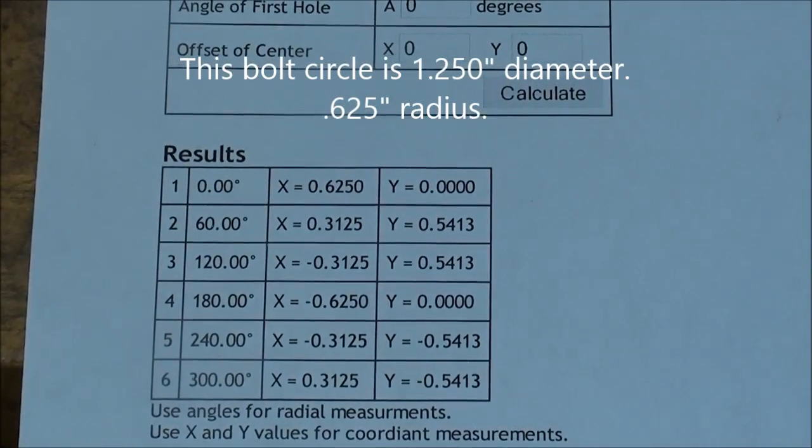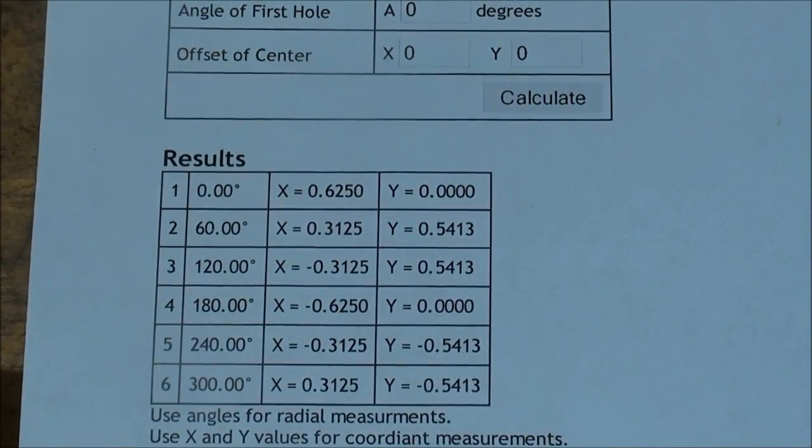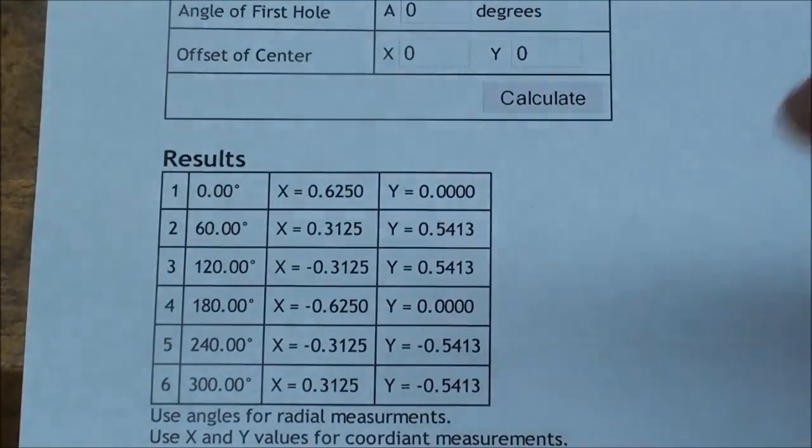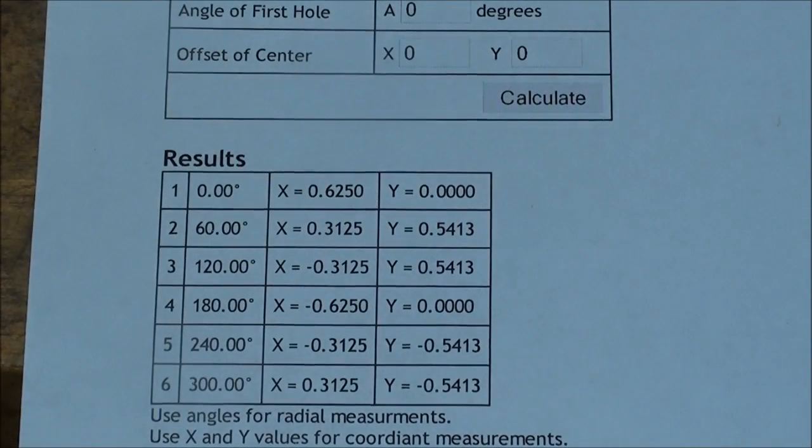Now you can use any number of holes you want. I think six look best on a flywheel, but that's up to you. So all of these videos will be concerned with six holes. Now I've taken these coordinates here and put them on another sheet, which I will show you here momentarily.